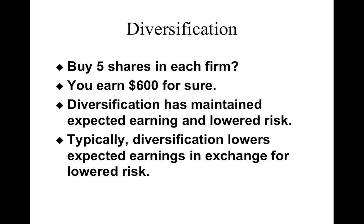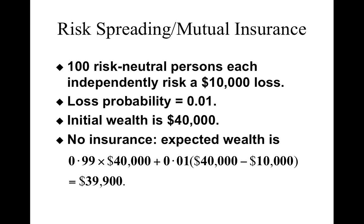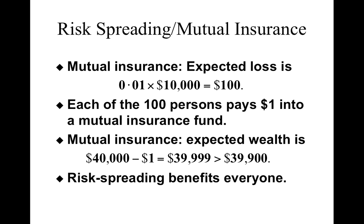That is the benefit of diversification. Diversification lowers risk, and that is another way of insuring against consumption shocks. You can also do this through mutual insurance — collect people together. Say there are one hundred risk-neutral persons, each independently facing a ten-thousand-dollar loss with probability one percent. Starting from an initial wealth of forty thousand dollars, without insurance the expected wealth is thirty-nine thousand nine hundred dollars.